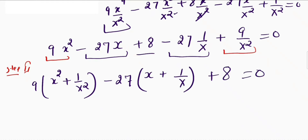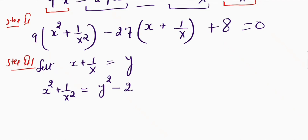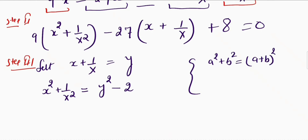The next step is step 3. Here I will let x plus 1 upon x equal to y. I can use the identity that x square plus 1 upon x square is equal to y square minus 2. This comes from the identity a square plus b square equals (a plus b) whole square minus 2ab.